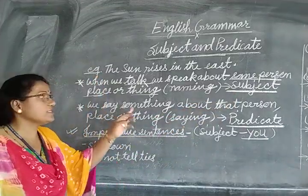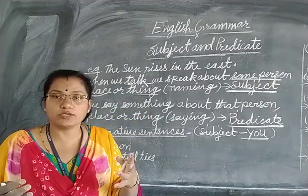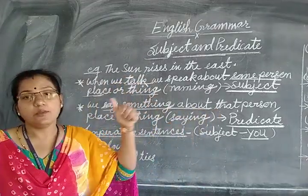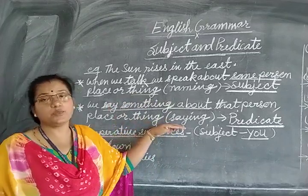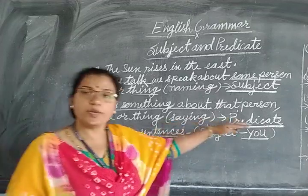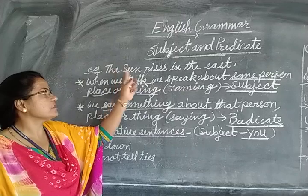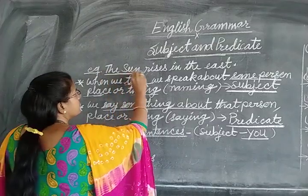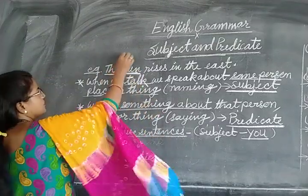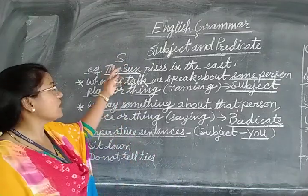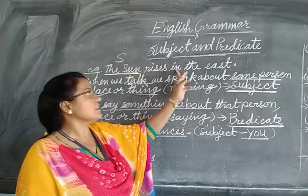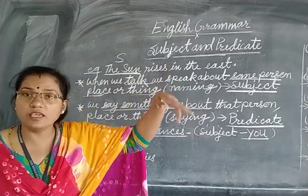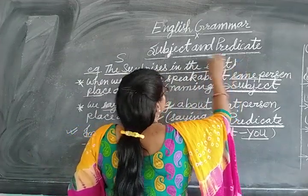Next, we say something about that person, place or thing. What we say about that person, place or thing is known as the predicate. So look at the sentence: 'The sun rises in the east.' We are talking about the sun, so 'the sun' is the subject. What we are saying about the sun? 'Rises in the east' — so 'rises in the east' is the predicate.